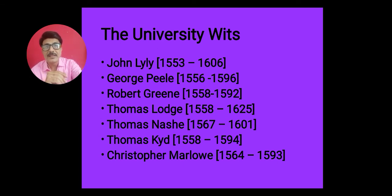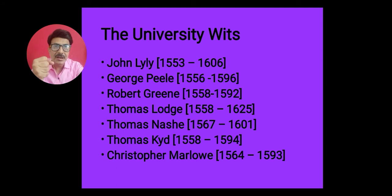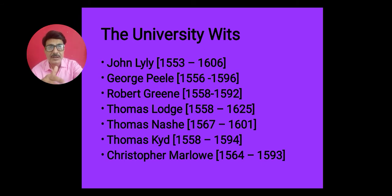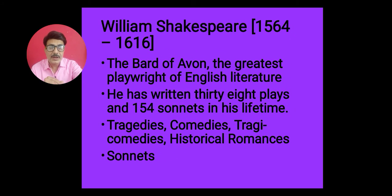Another important group of writers of the Elizabethan age is known as the University Wits — a group of seven writers: John Lyly, George Peele, Robert Greene, Thomas Lodge, Thomas Nashe, Thomas Kyd, and Christopher Marlowe. Christopher Marlowe was the leader of this group. These University Wits were all good friends studying together in the same university, and they were the major writers of the Elizabethan age.